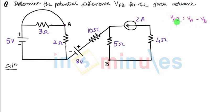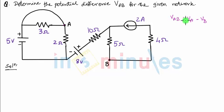Another approach to find VAB is to start from the second point, which is point B, and travel up to point A, collecting all the voltages that you come across — in other words, add up all the voltages along the way. Starting from point B, travel up to point A and add all the voltages. This is the approach we are going to use in this particular question.